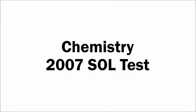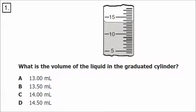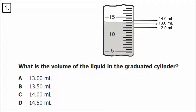These are the answers to the Chemistry 2007 SOL test. Number one: what is the volume of the liquid in the graduated cylinder? If we label these lines, we have 10 milliliters, 11, 12, 13, 14. You can see that the bottom of the meniscus, which is where we're supposed to read the liquid level, is halfway between 13 milliliters and 14 milliliters. So the correct answer is B, 13.5 milliliters.